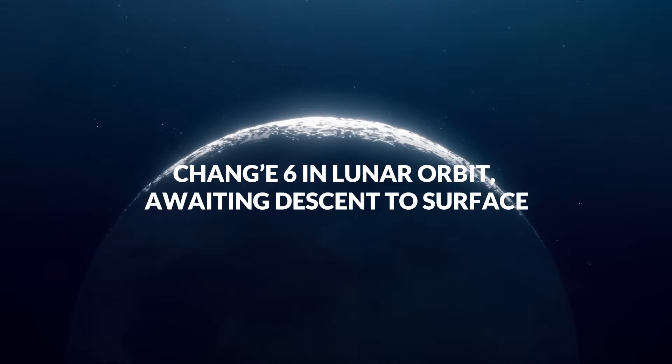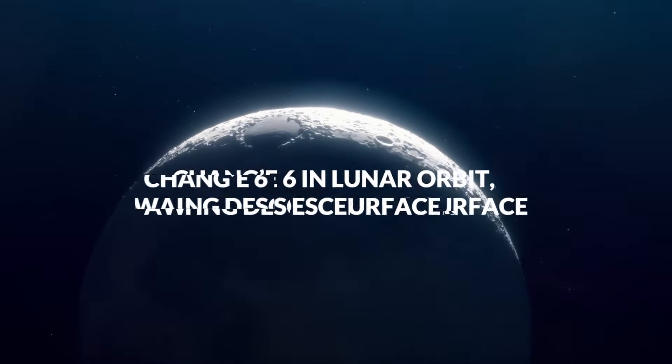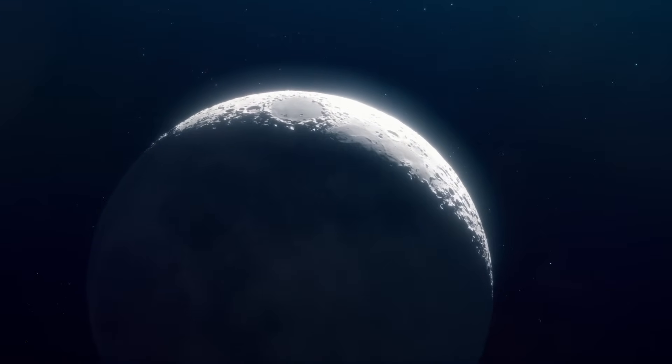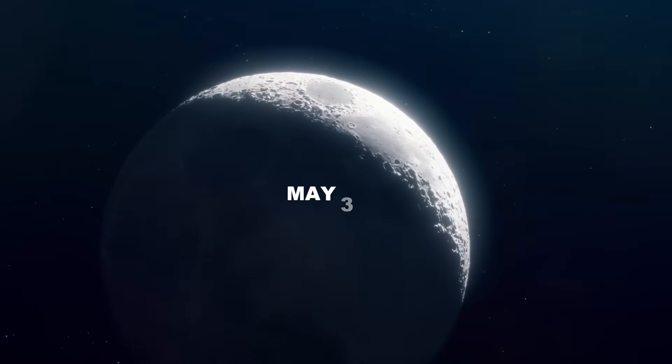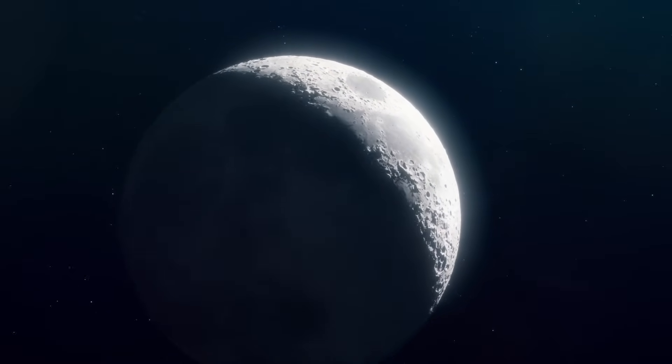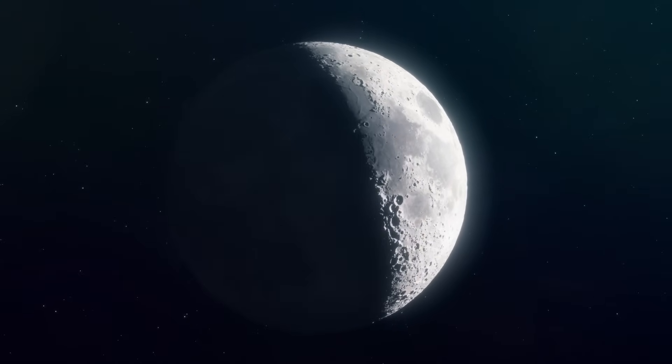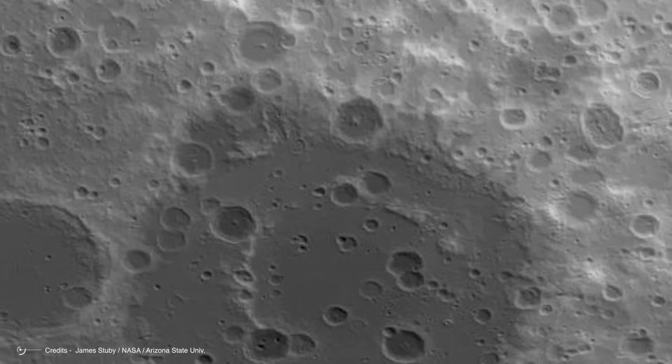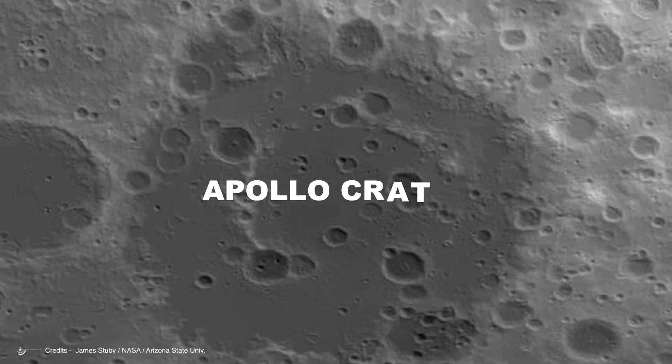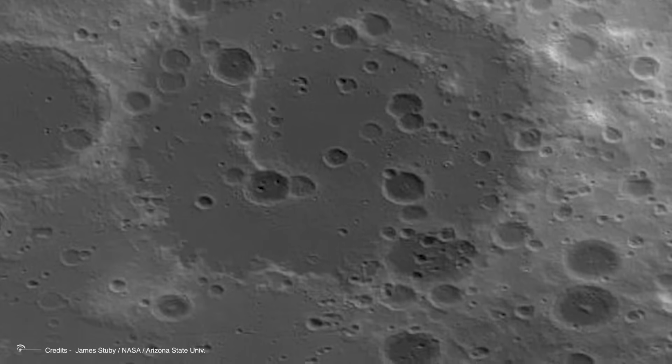Chang'e 6 in lunar orbit awaiting descent to surface. Did you know, on May 3, the Chinese robotic mission Chang'e 6 embarked on a journey aiming to retrieve samples from the far side of the Moon for the first time. After a five-day journey, on May 8, the probe successfully entered lunar orbit, where it currently awaits its descent to the surface with a lander set to touchdown in the Apollo crater within the vast south pole Aitken basin.